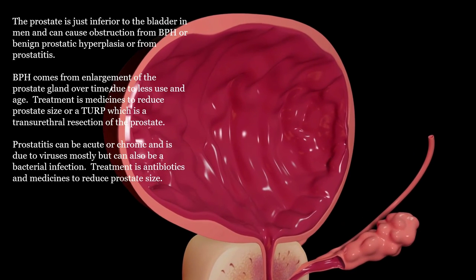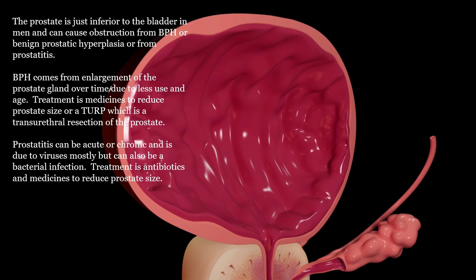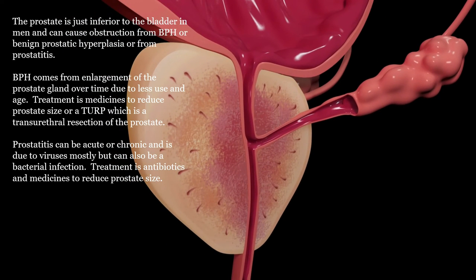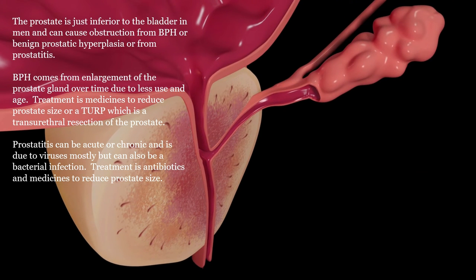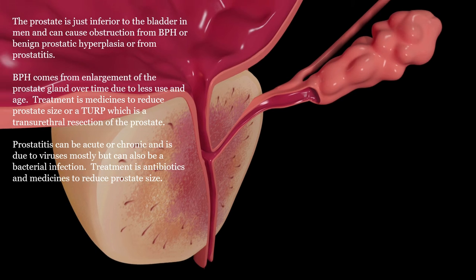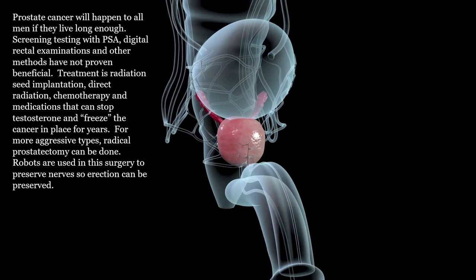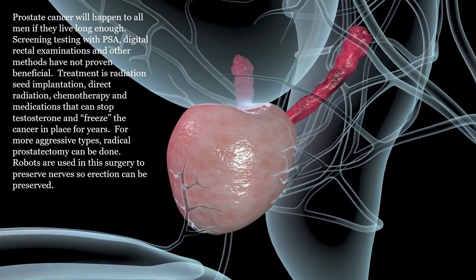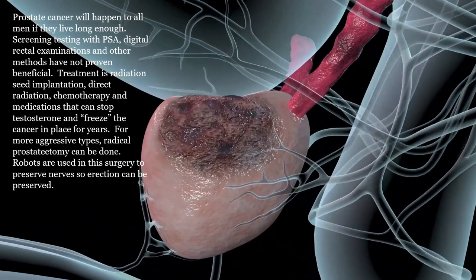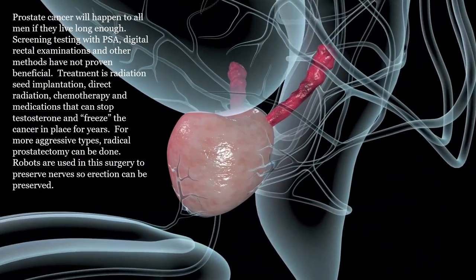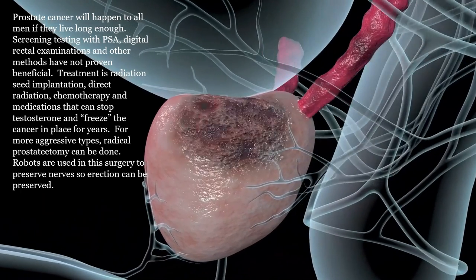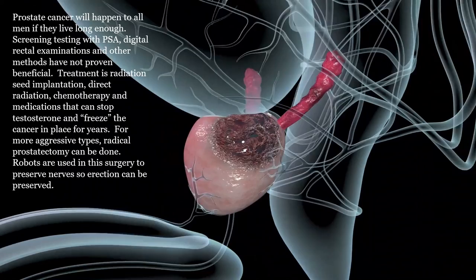The prostate is just inferior to the bladder in men and can cause obstruction from BPH, or benign prostatic hyperplasia, or from prostatitis. BPH comes from enlargement of the prostate gland over time due to less use with age. Treatment is medicines to reduce prostate size or a TURP, which is a transurethral resection of the prostate. Prostatitis can be acute or chronic and is due to viruses mostly, but can also be a bacterial infection - treatment is antibiotics and medications to reduce prostate size. Prostate cancer will happen to all men if they live long enough. Screening with PSA and digital rectal examination has not proven beneficial. Treatment is radiation, seed implantation, direct radiation, chemotherapy, and medications that can stop testosterone. For more aggressive types, radical prostatectomy can be done. Robots are used in this surgery to preserve nerves so erection can be preserved.